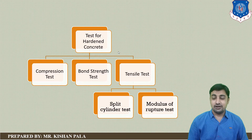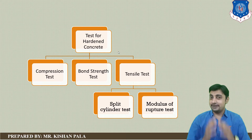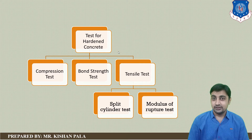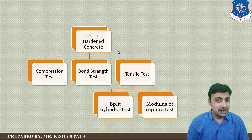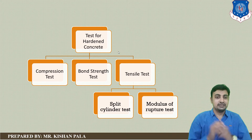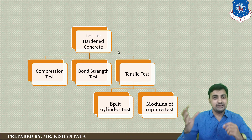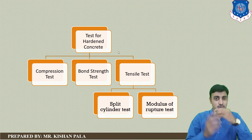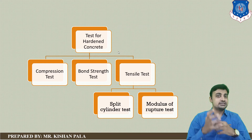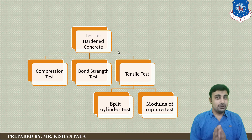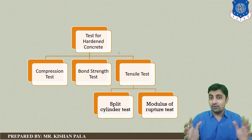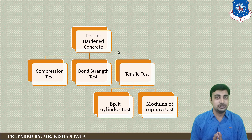You might have a question about why we find the hardened properties of the concrete mass. Concrete has different types of hardened properties, like compressive strength, flexural strength, and bond strength between steel and concrete. You have to identify the strength of these parameters. First of all, you have to identify the compressive strength of the concrete mass, because concrete is good in compressive strength.